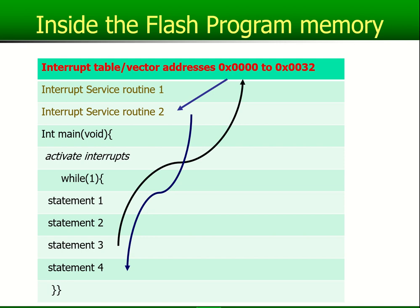This is why what will happen in an interrupt is: you will have interrupt service routines — let's say for an ADC, a timer, or an IO — each and every one of them will have its own interrupt service routine (ISR). You can write these interrupt service routines after the main file, at the bottom of your program. It doesn't really matter where you place it; I personally prefer to place it at the front or top of the main program.